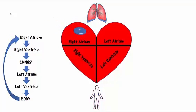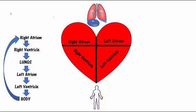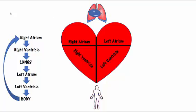Deoxygenated blood enters the heart at the right atrium, then travels to the right ventricle. From there, it goes to the lungs, and it is going to gain oxygen from the lungs. At this point, the blood becomes oxygenated.